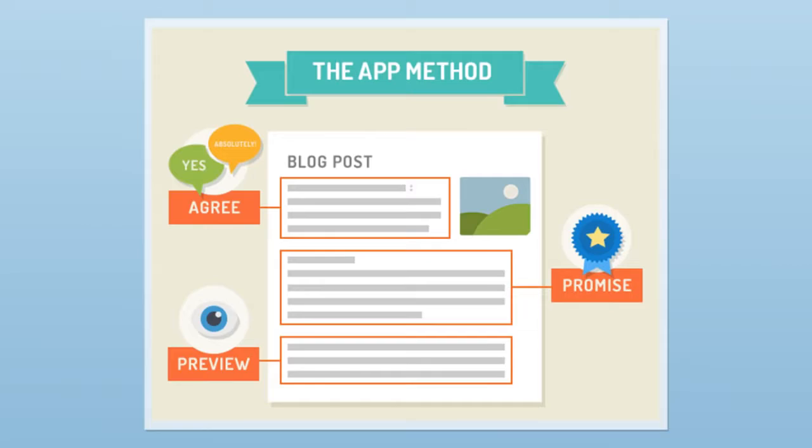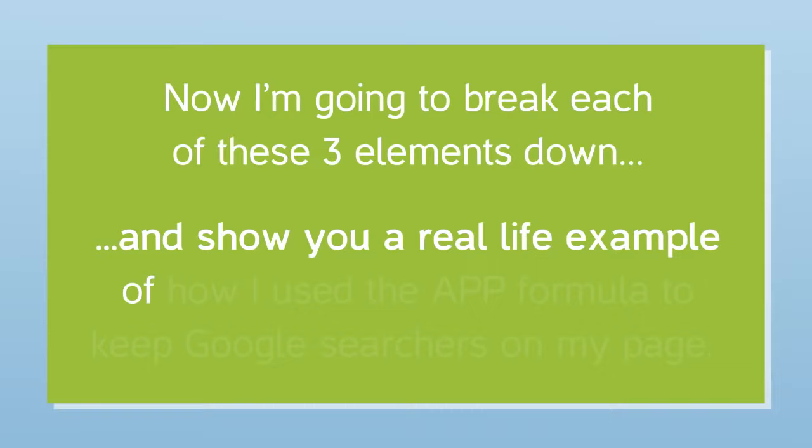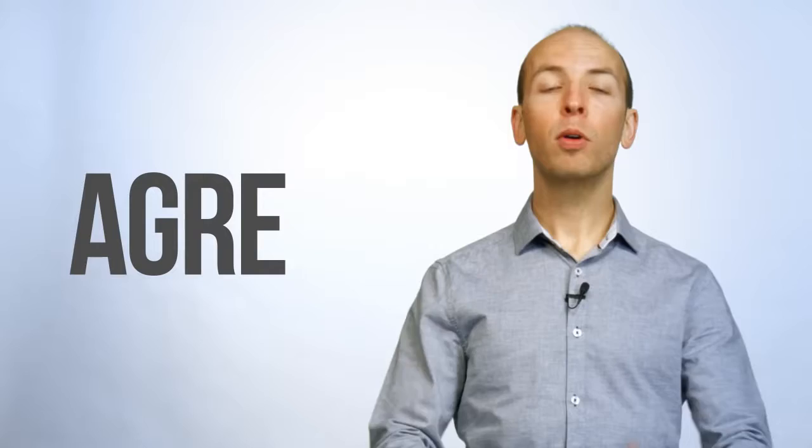Here's what the APP formula looks like. As you can see, APP stands for agree, promise, and preview. Now I'm going to break each of these three elements down and show you a real-life example of how I use the APP formula to keep Google searchers on my page. First up, we have agree.